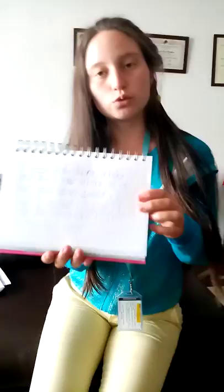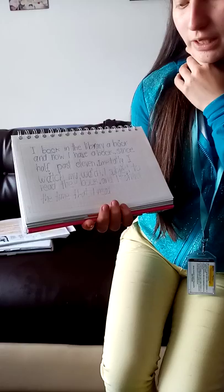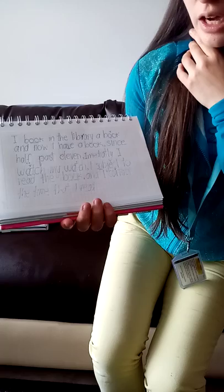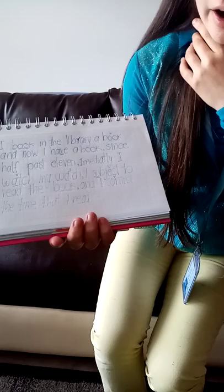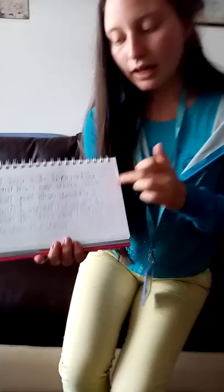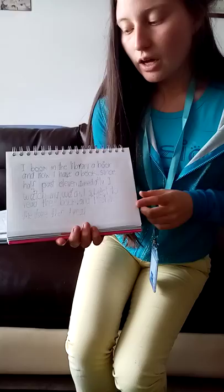Now I'll give a tongue twister: 'I book in the library a book, and now I have a book, signed half past eleven. I immediately washed my wash, I subject myself to read the book, and I control the time that I read.' You can see the difference between the examples shown before — words like 'book' and 'subject' used as both verb and noun.